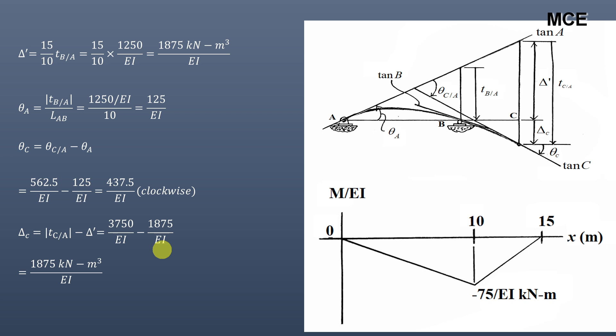This is how you find the slope and deflection for a beam using the moment-area method. This is a beginner problem just to understand the concept; more complicated problems will be covered in future videos. Remember, the moment-area method does not give the direct slope and deflection — it gives the angle and deviation of tangents, which you relate to the unknowns. I hope this was clear and effective. Subscribe, share, and stay tuned to Master Civil Engineering.